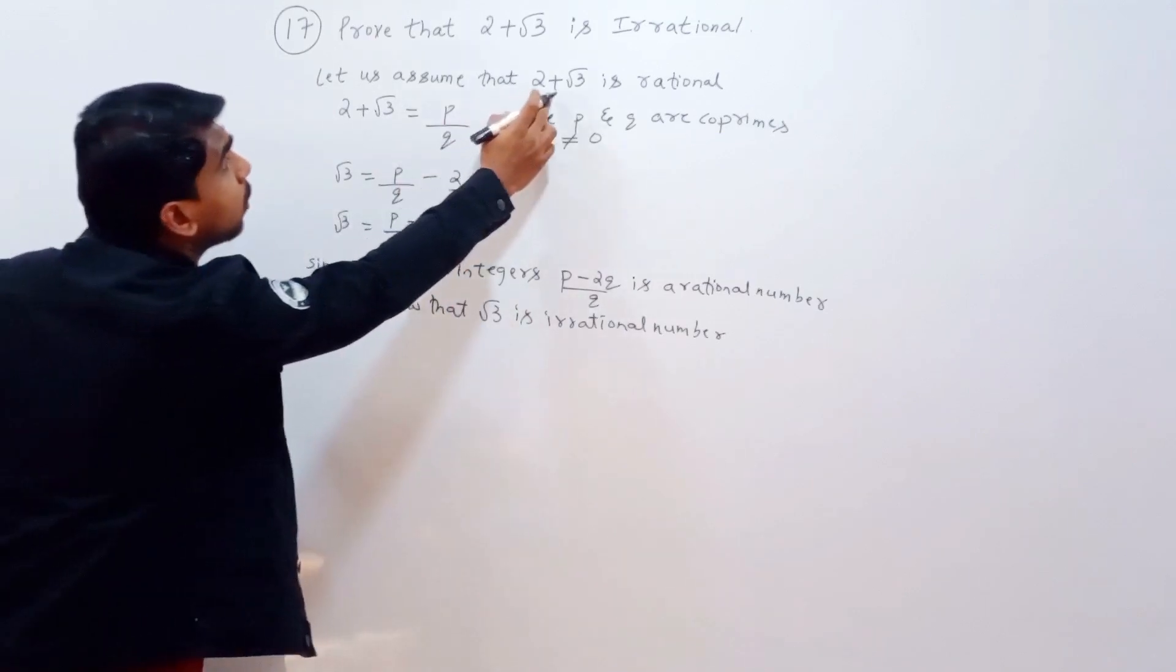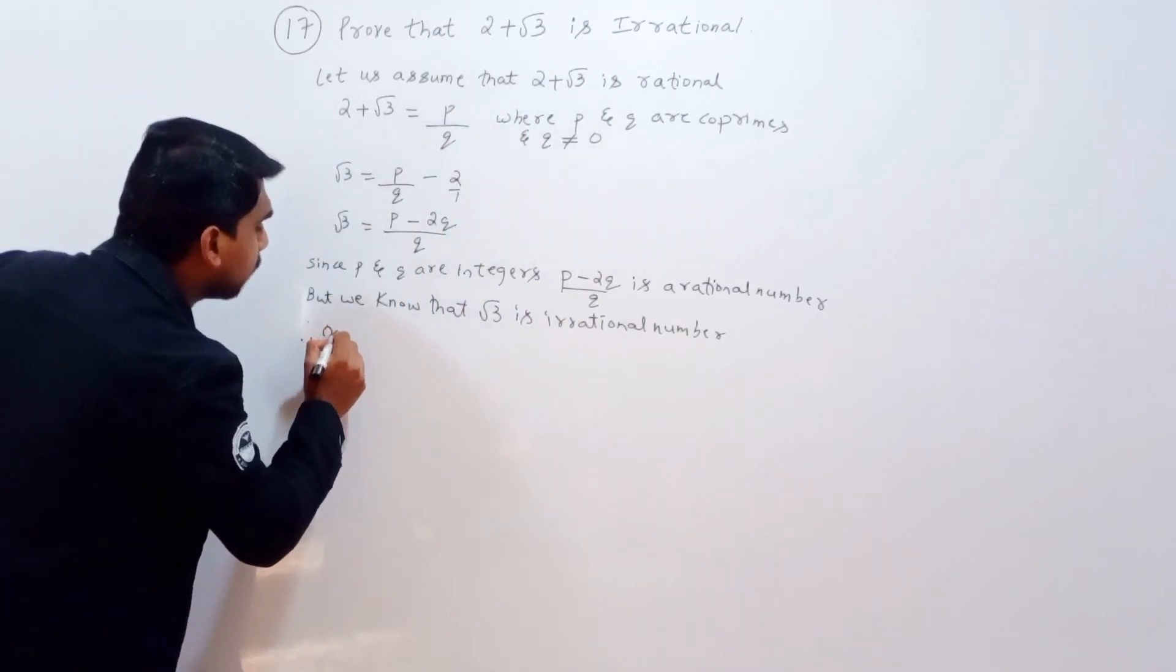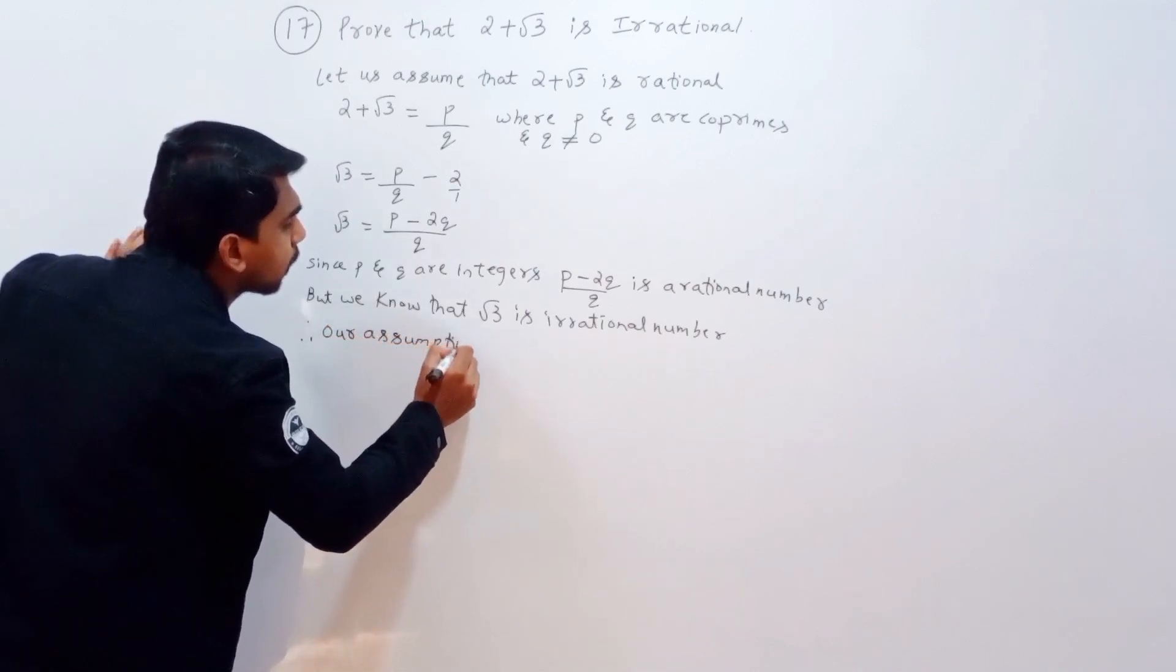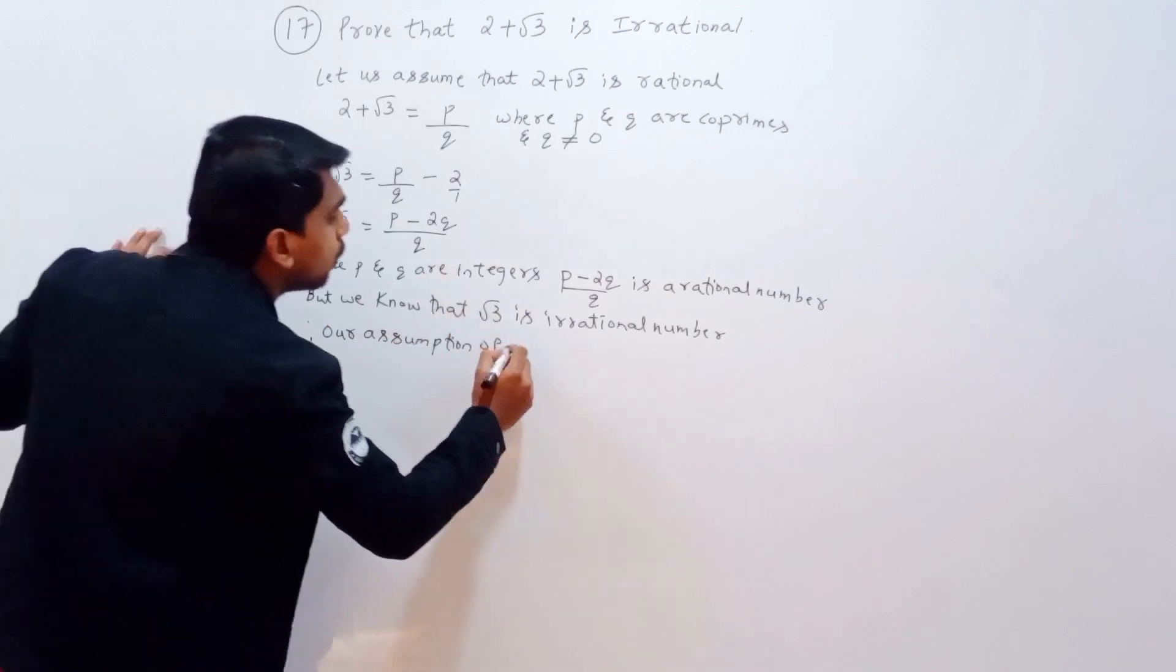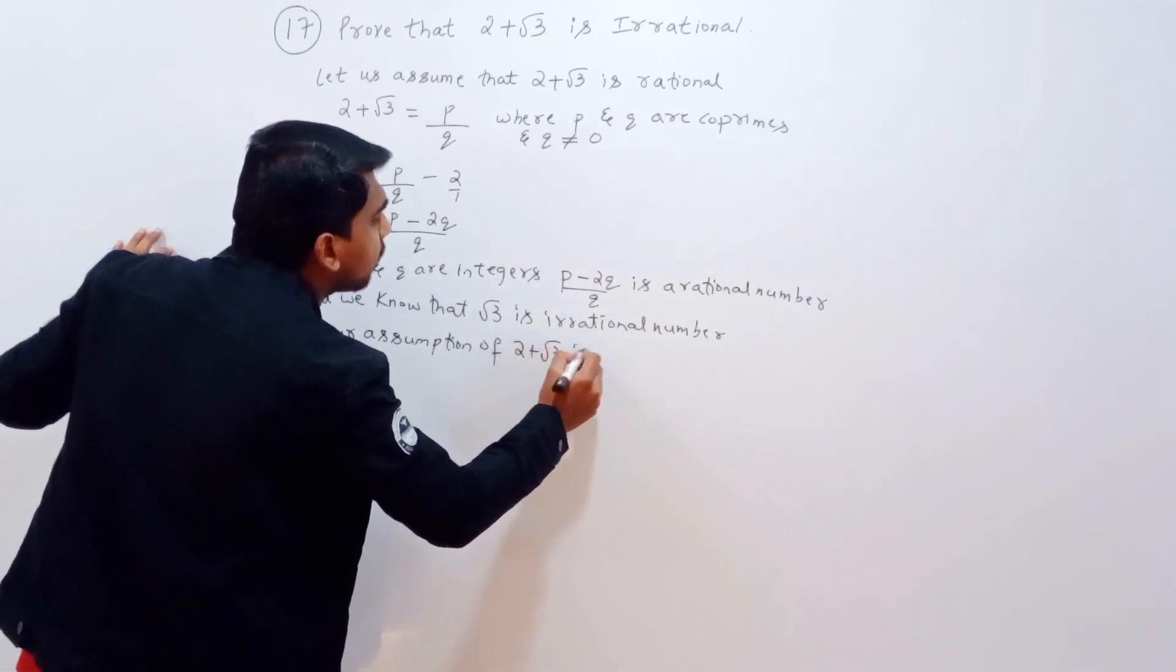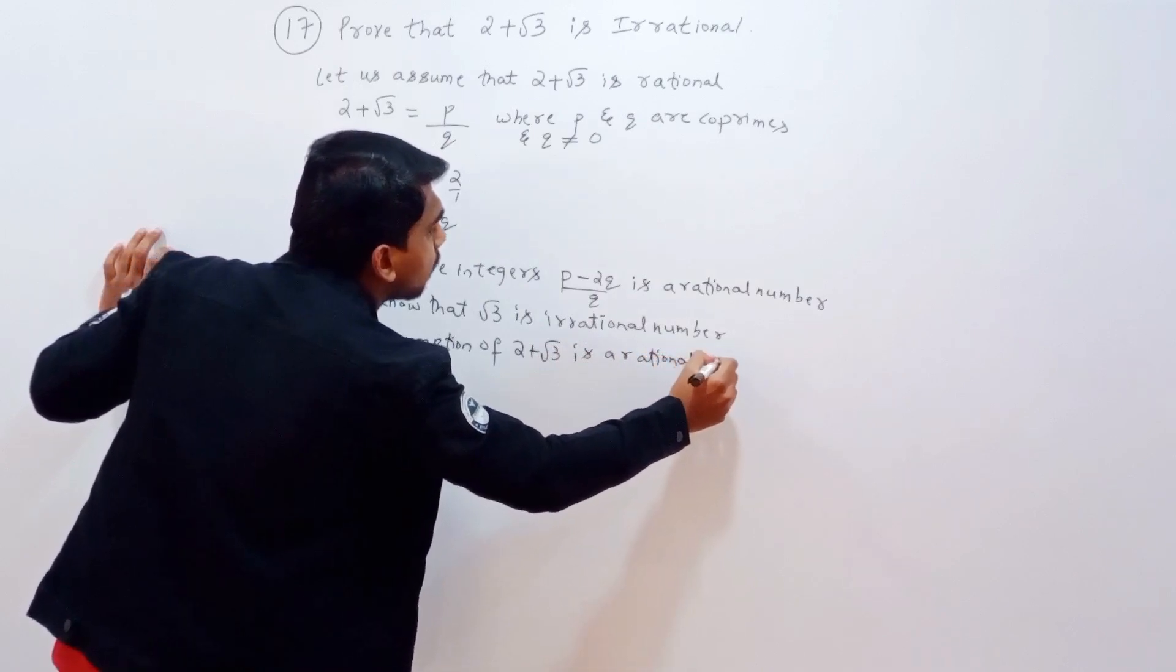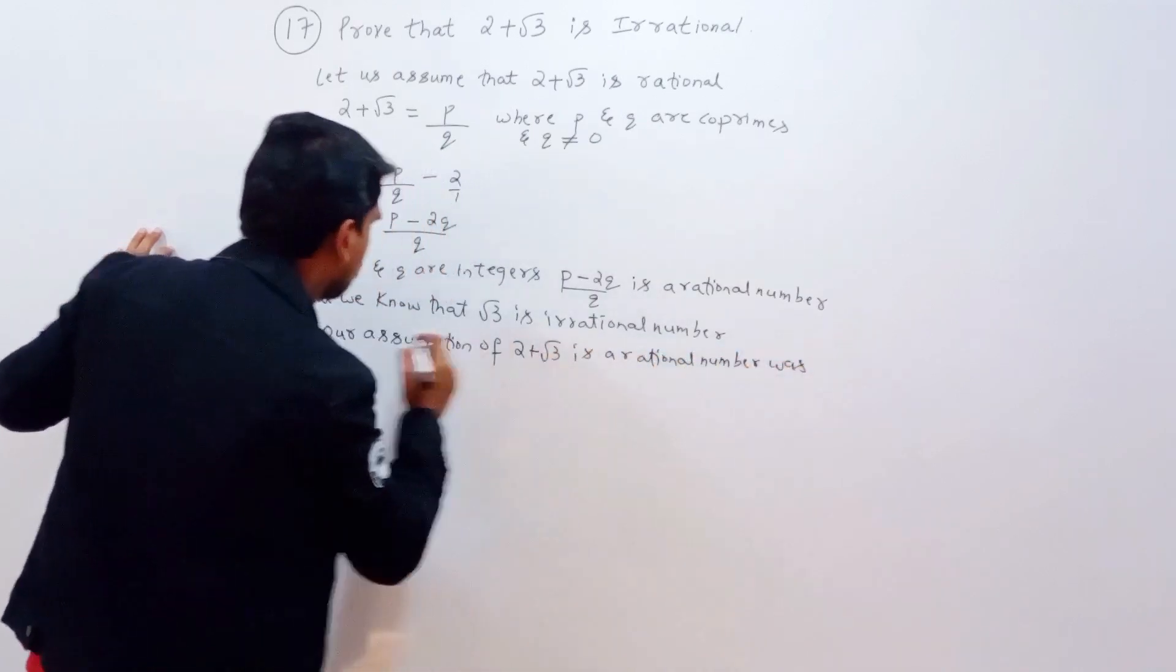So our assumption is wrong. Therefore, our assumption that 2 plus root 3 is a rational number was wrong.